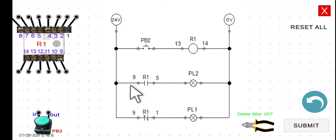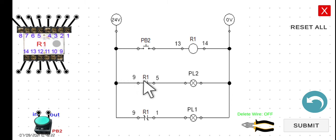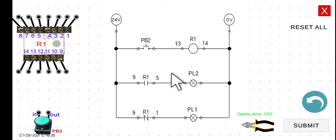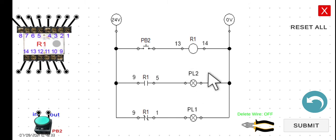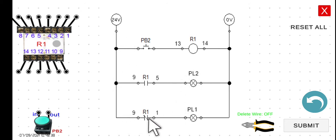Now let's analyze the second rung. The current will not be able to flow through the second line because this is a normally open contact — it will not allow current to flow to PL2. This means PL2 will be turned off.